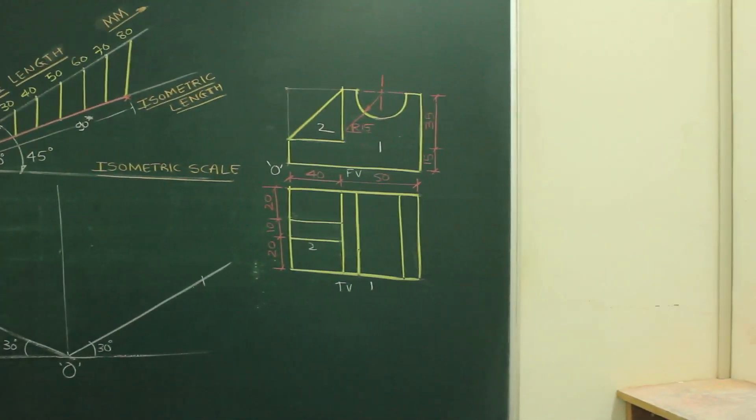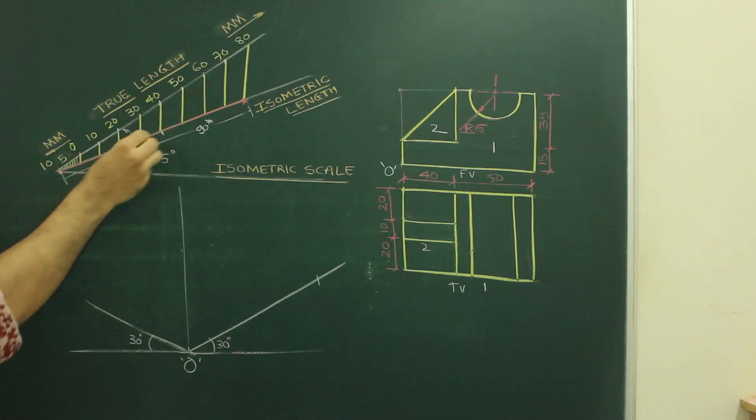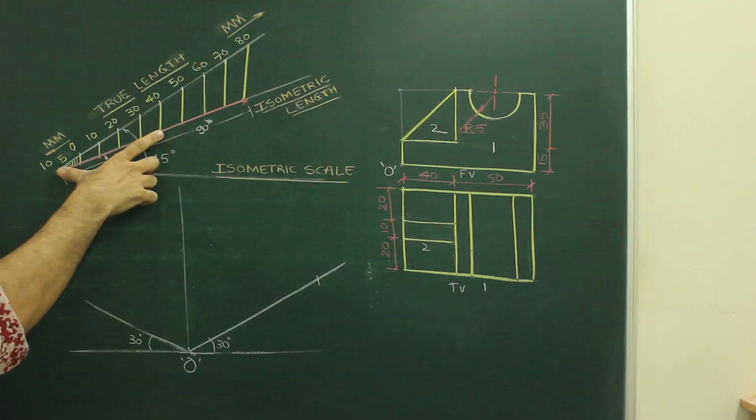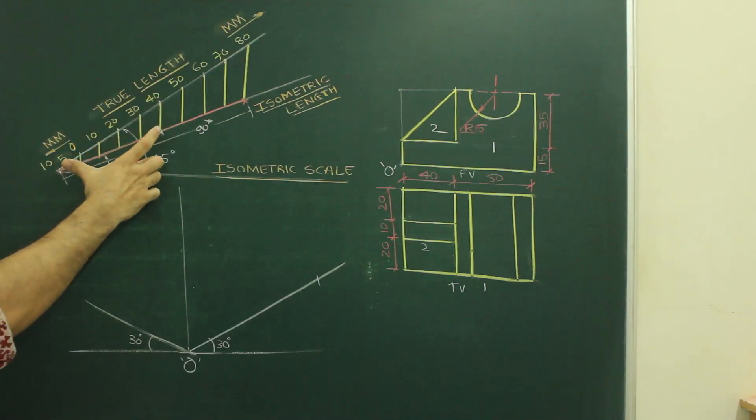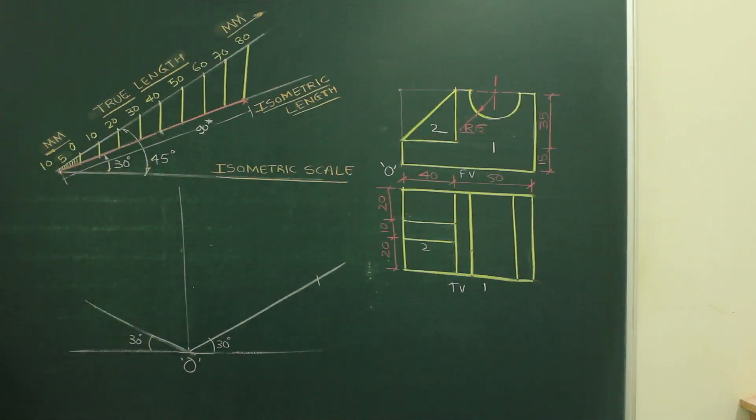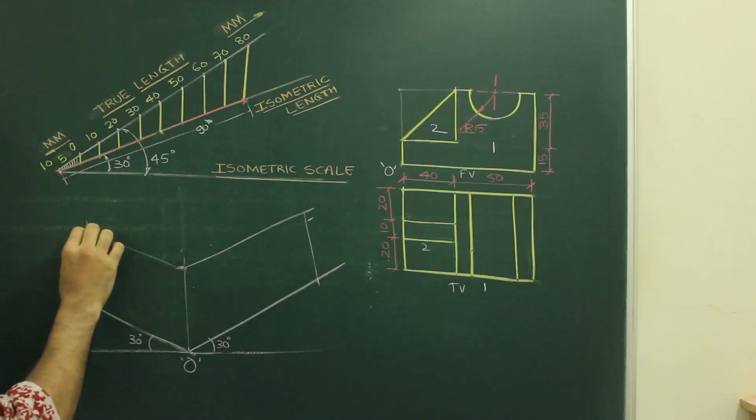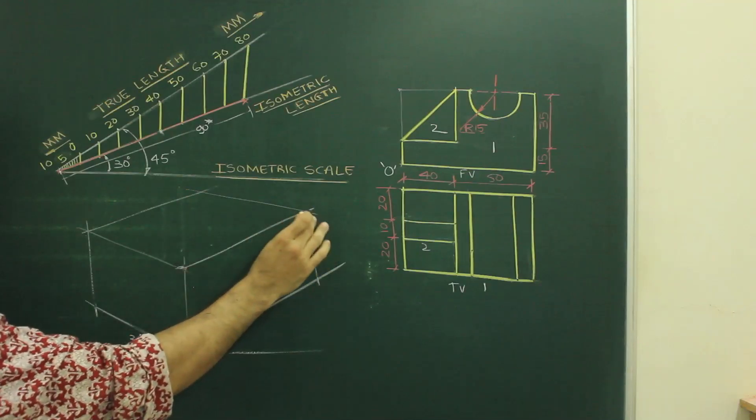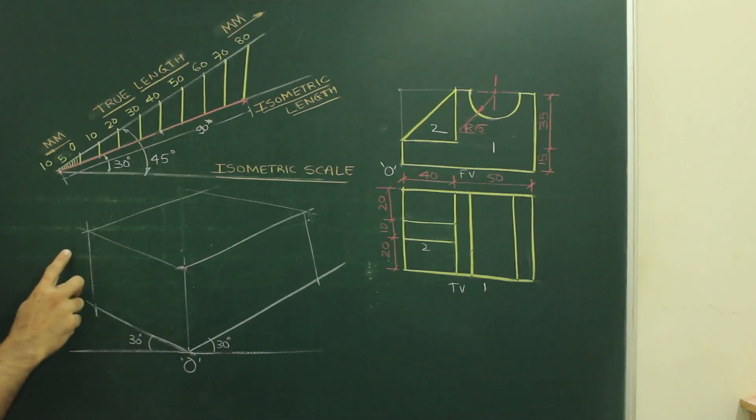Now, height is 50. So what I will do? I will take from here to here, this point to this point. I will take this length. That will be 50 because it is 40 plus 10, 50. So I will take this length and I will cut it here for height as well as width. So I got layout. So we got 90 star, 50 star and 50 star.